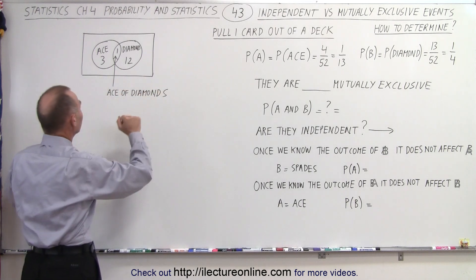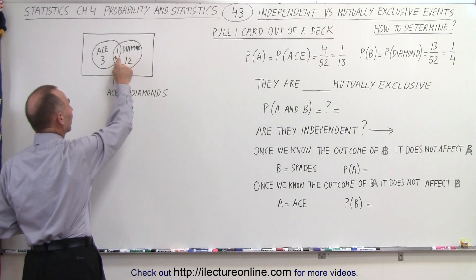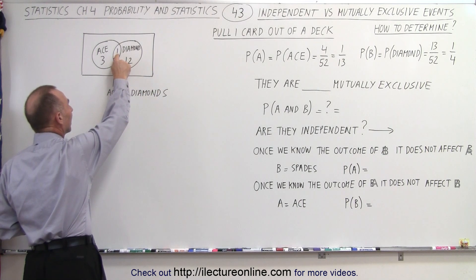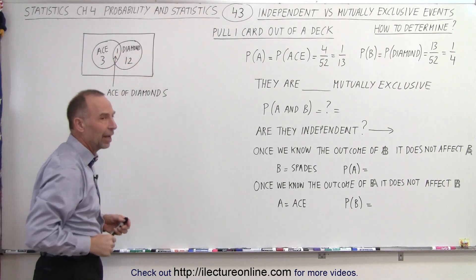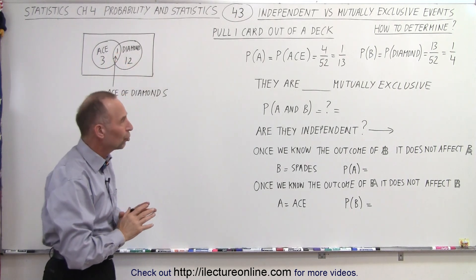So when we draw a Venn diagram, we can clearly see that there's an overlap. It can both be a diamond and an ace, ace of diamonds, so they're not mutually exclusive.